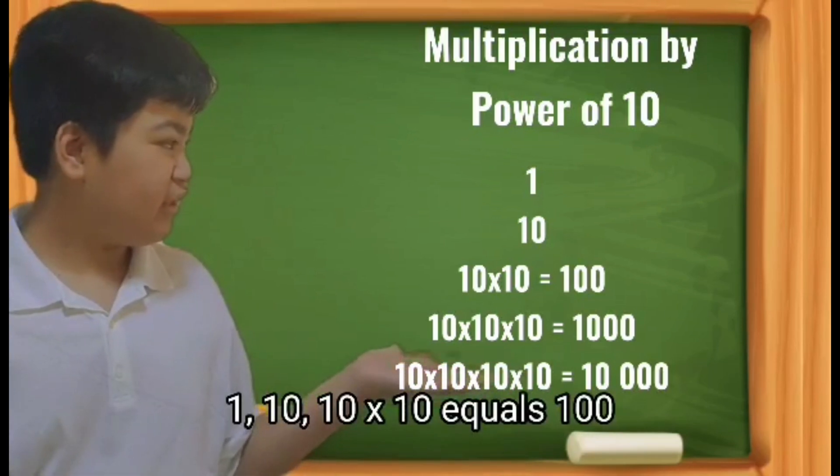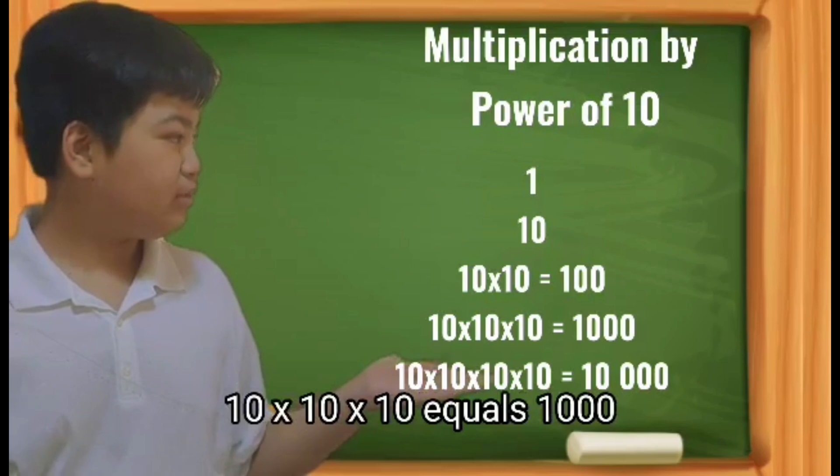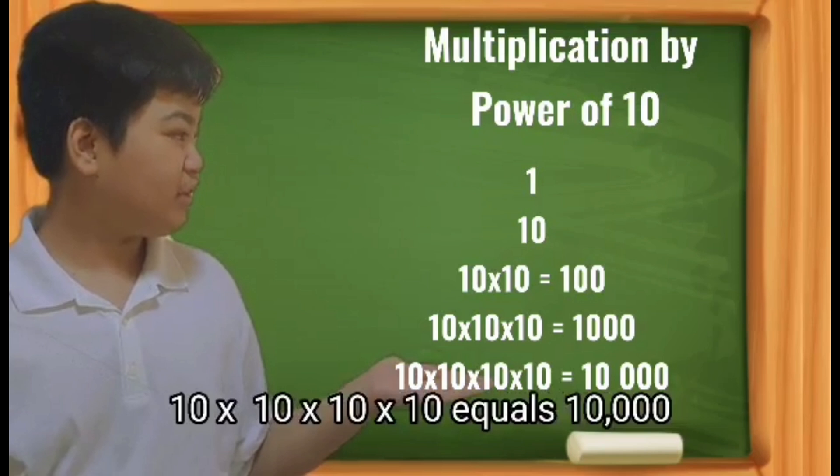1, 10, 10 times 10 equals 100, 10 times 10 times 10 equals 1000.